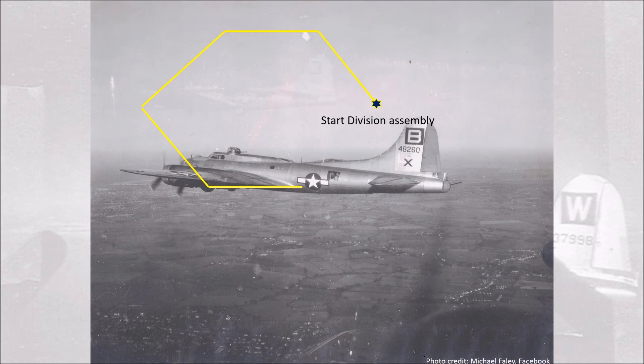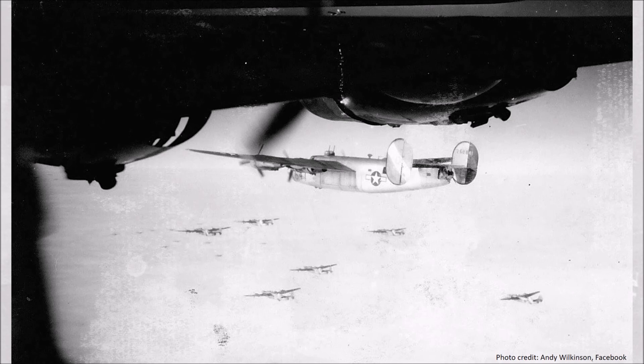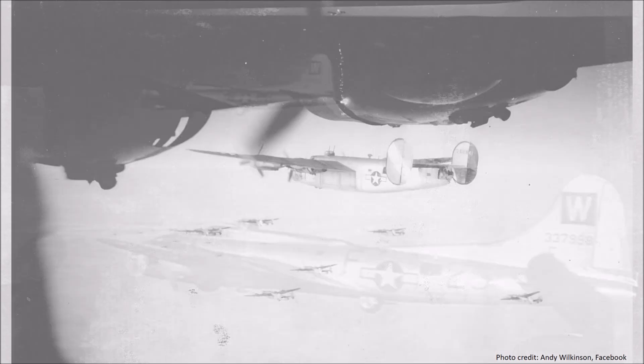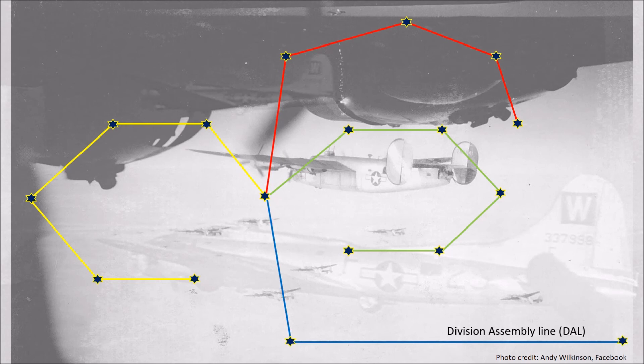The last point of the combat wing assembly would be the first point of the division assembly. As told in part 2.1, the first and third division groups flew with a 2 minute separation in between them on the same altitude. The B-24s formed during this process their box formations. The division assembly was a planned route where combat wings would take their correct position in relation to each other. Although the division assembly line looked different for all three divisions, they had one thing in common: at some point the UK coastline was crossed.